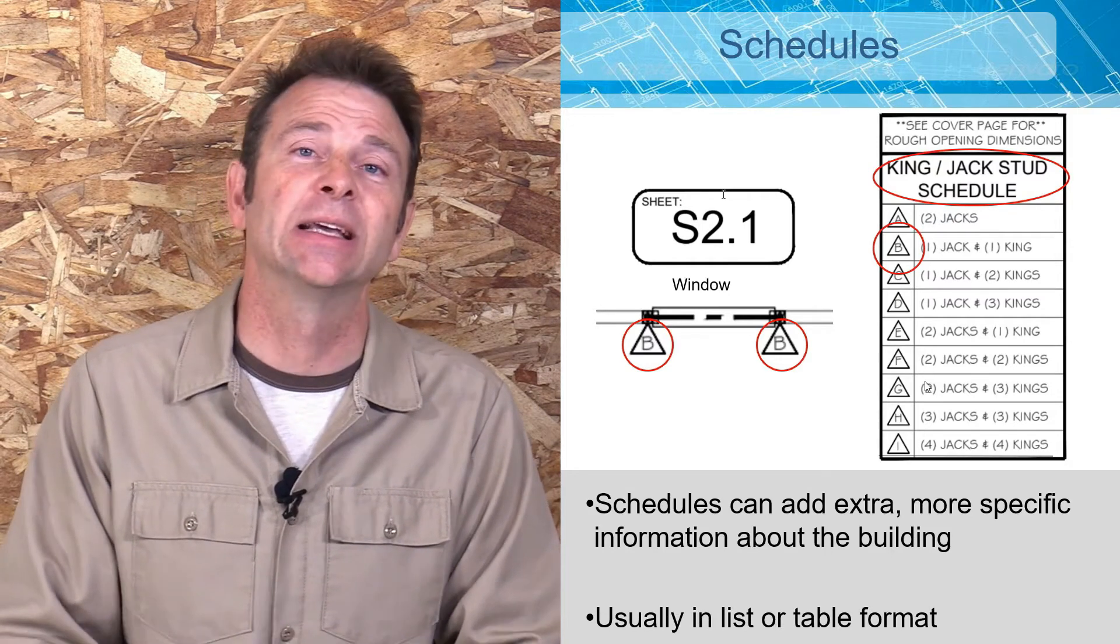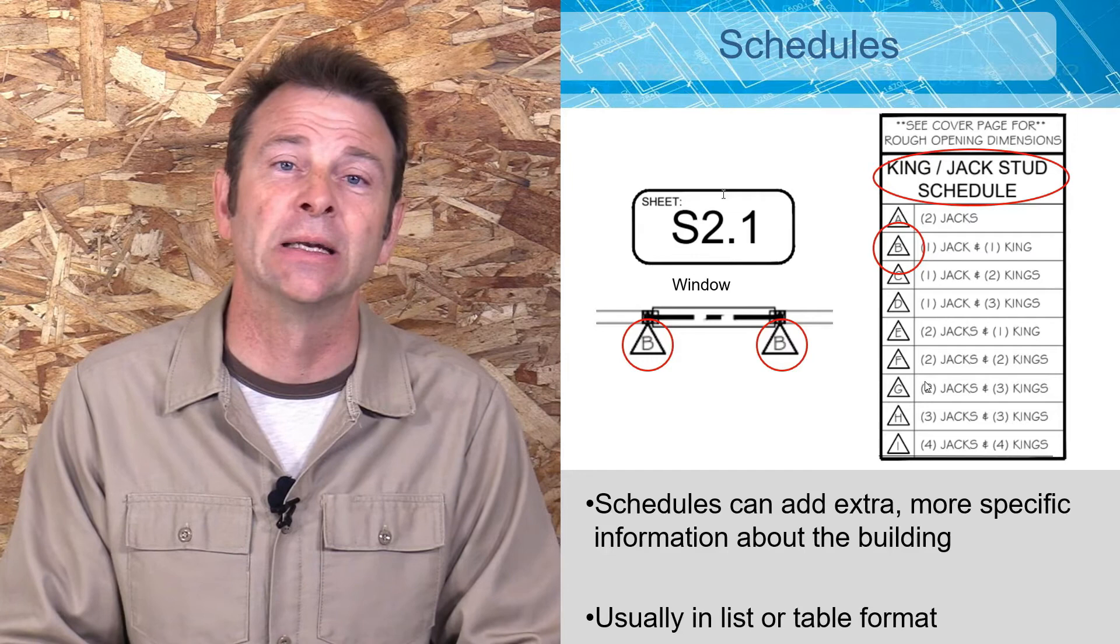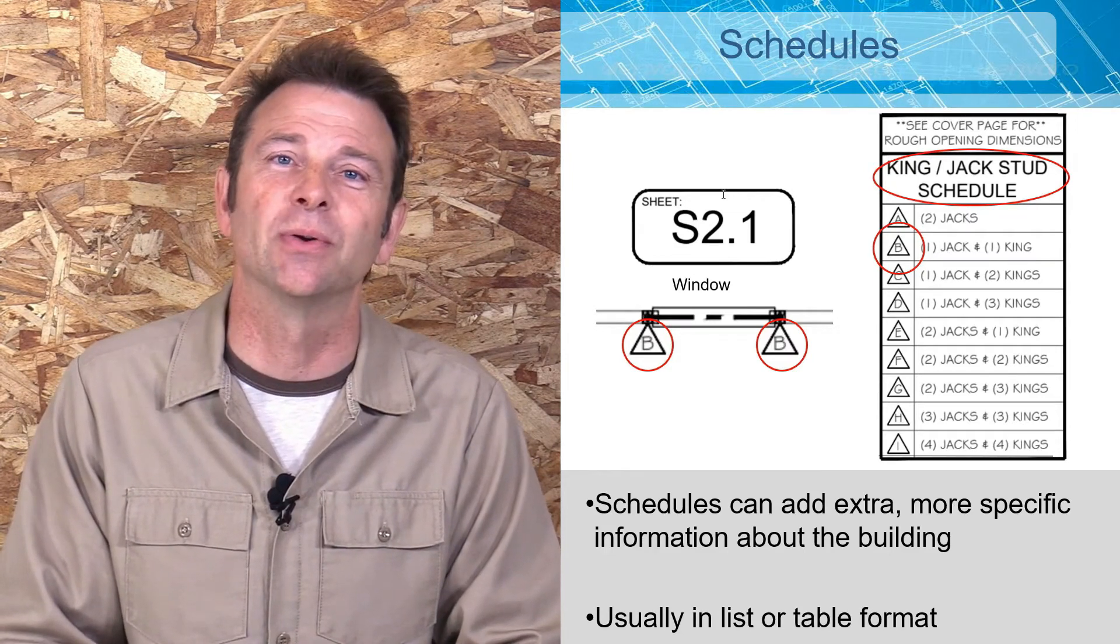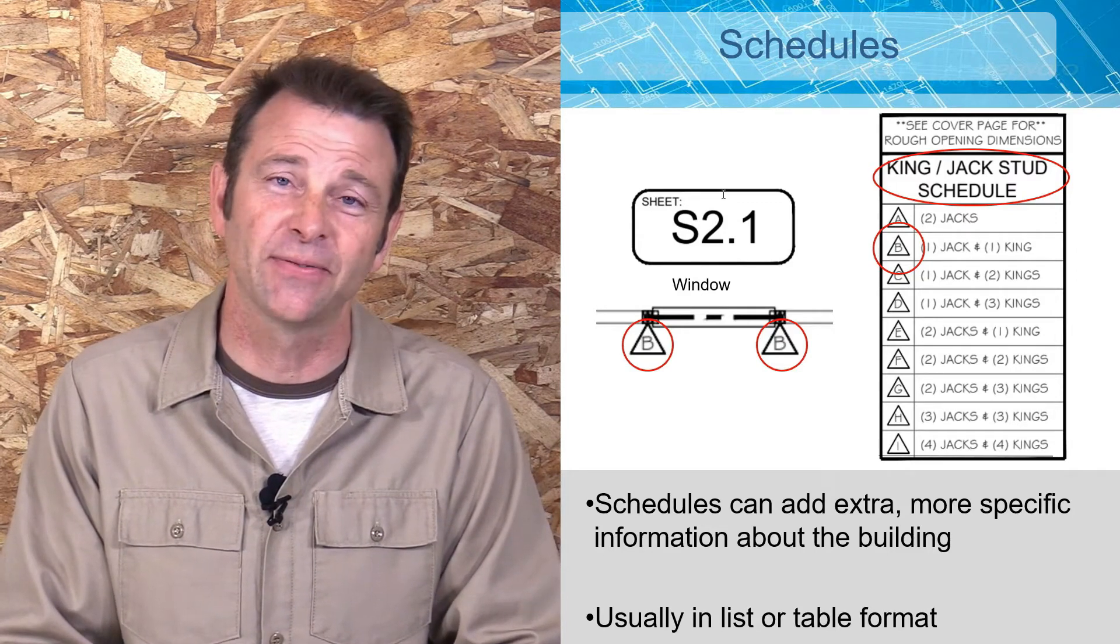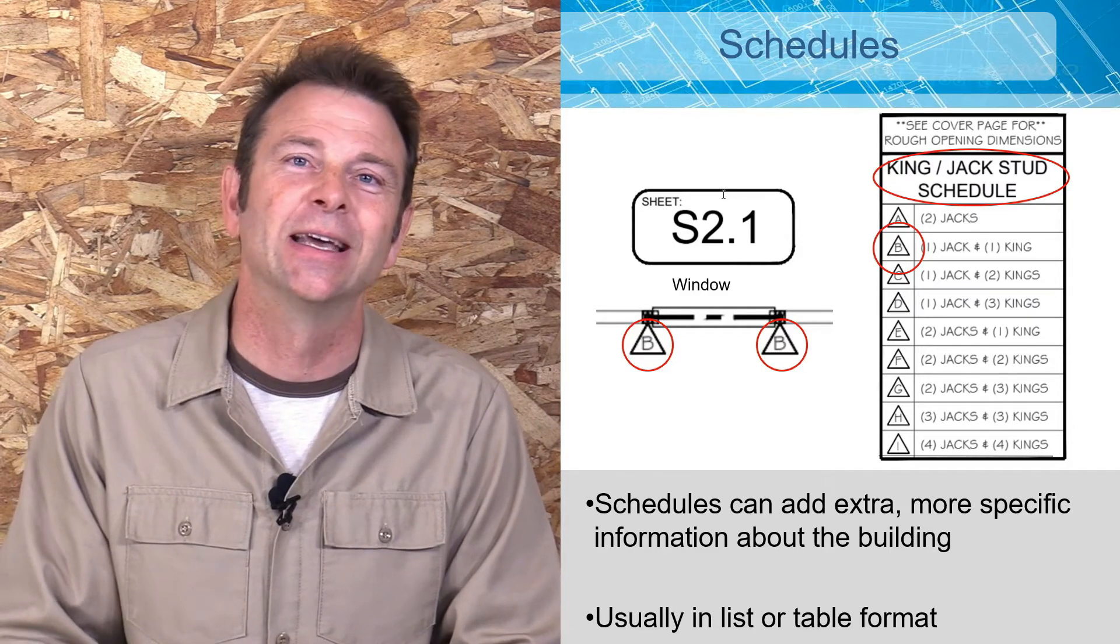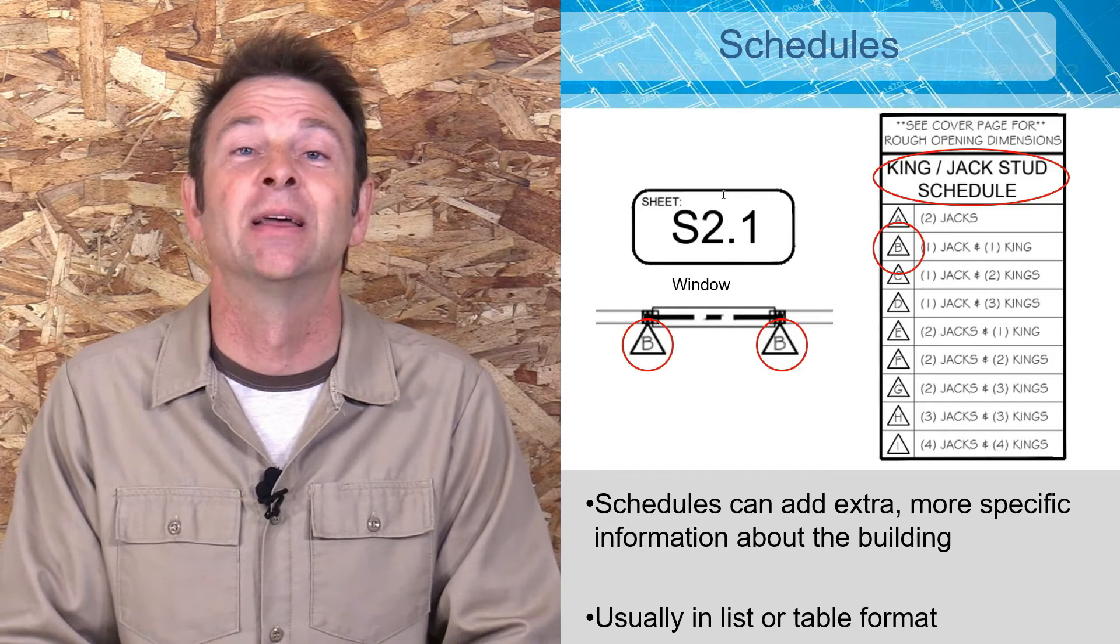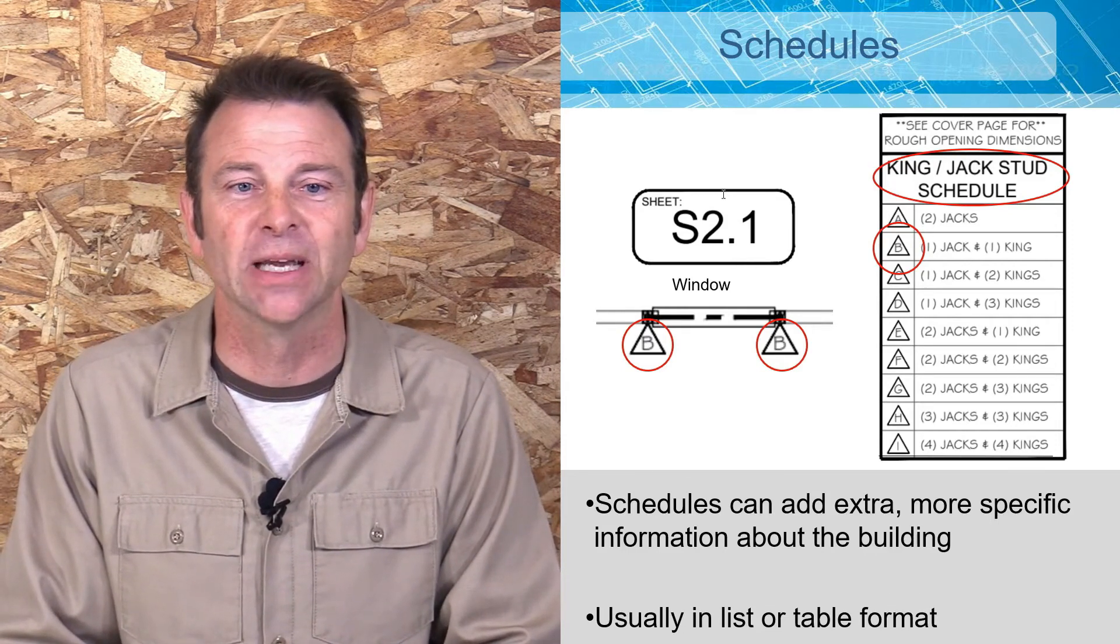Here we see a schedule. The difference between a schedule and a legend is a legend is going to talk to us about symbols that we're going to find. A schedule is going to talk to us about specific information that we're going to apply to some of those symbols and to specific locations on the plans.